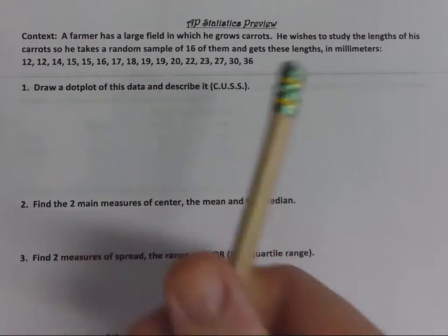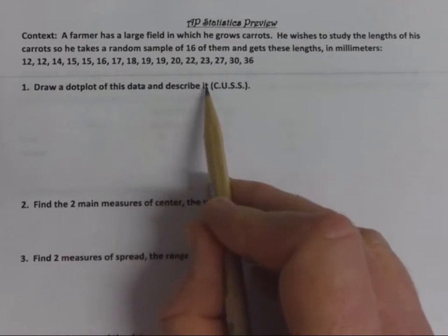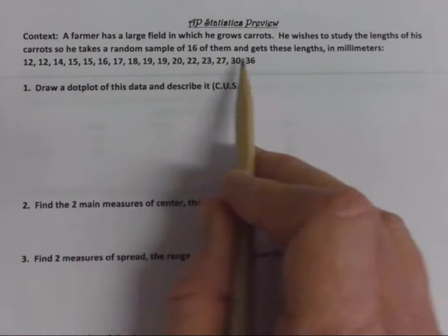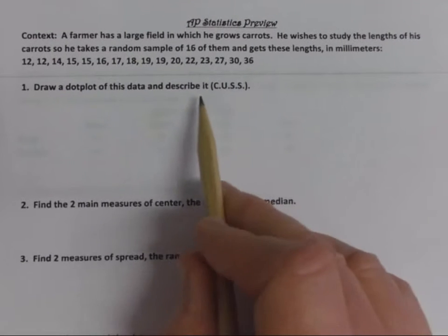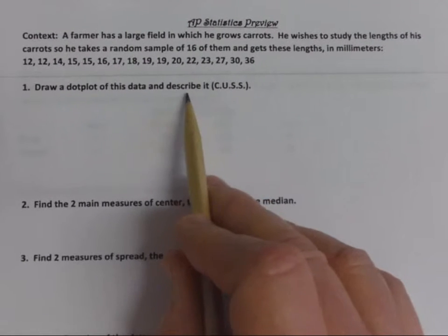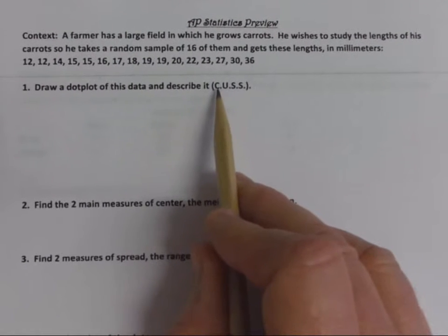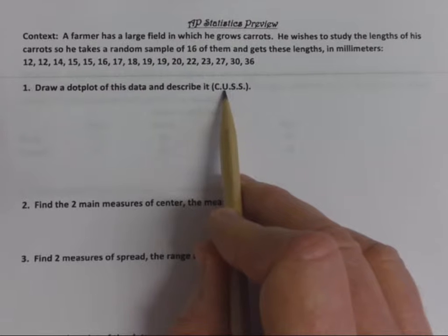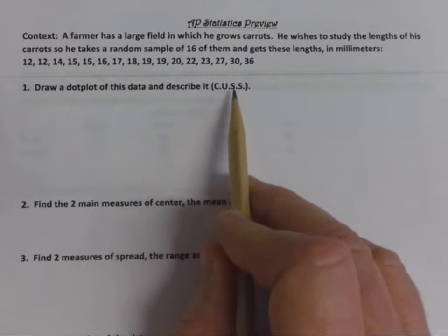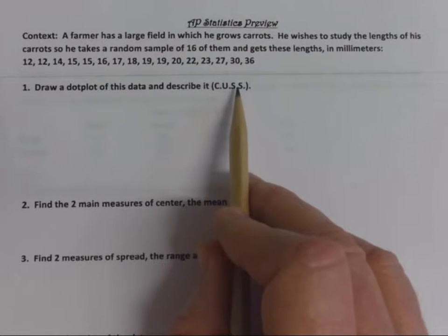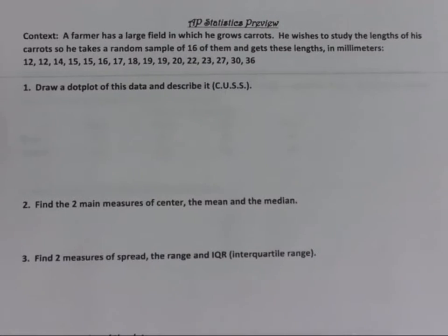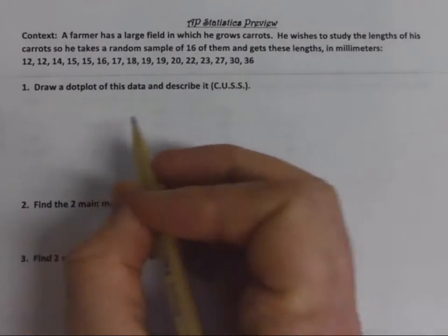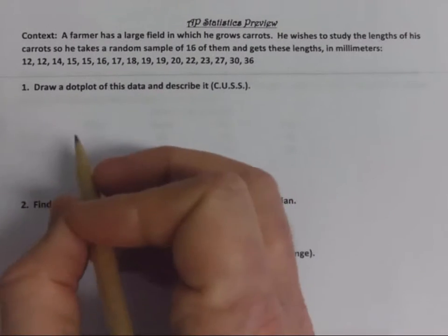Cussing means whenever you're asked to describe a distribution of quantitative data — just a list of numbers — you describe its center, whether it has unusual values (which we call outliers), its shape, and its spread. A dot plot is simply a number line with dots above it.